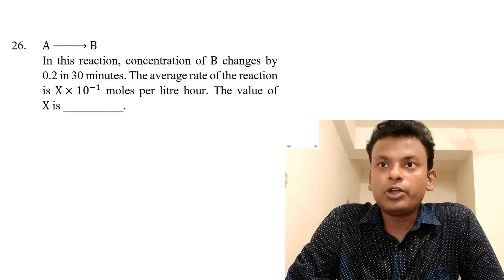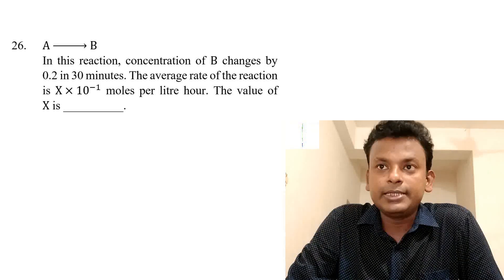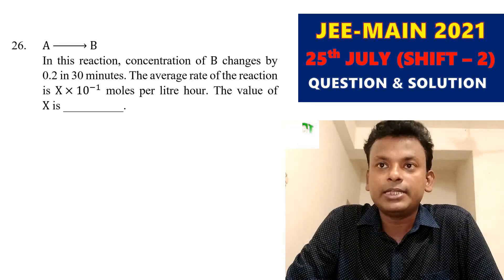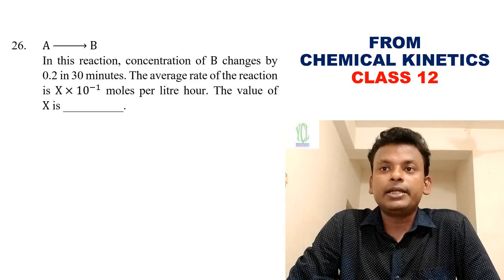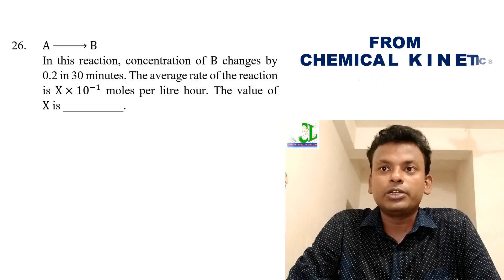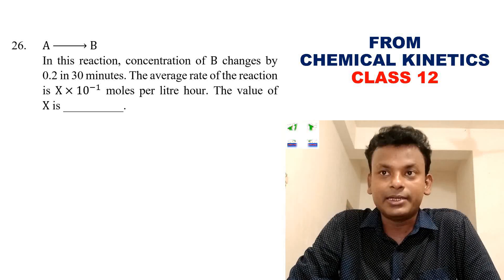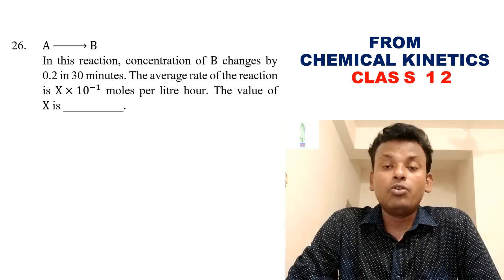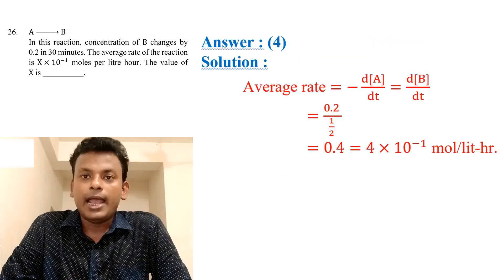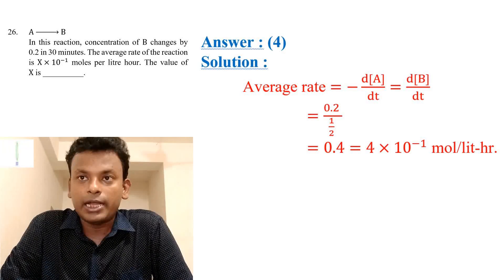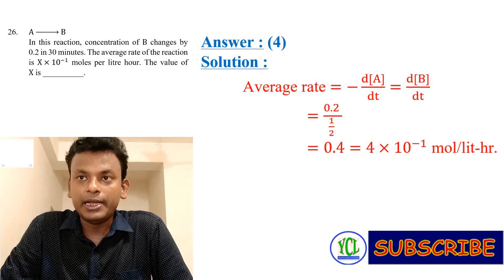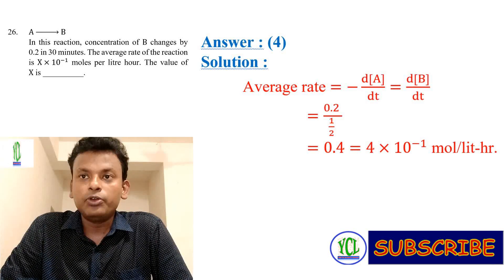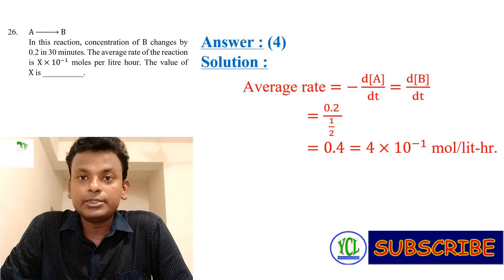Question 26: A → B reaction; concentration of B changes by 0.2 mol/L in 30 minutes. Average rate is x × 10⁻¹ mol/L/hour; find x. Average rate = ΔB/Δt = 0.2 mol/L ÷ 0.5 hour = 0.4 mol/L/hour = 4 × 10⁻¹. So x = 4.